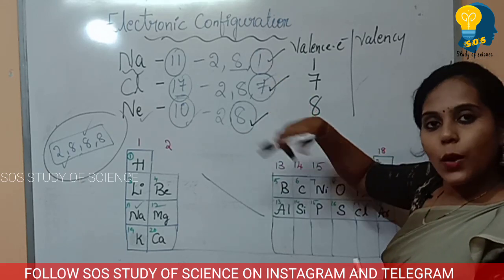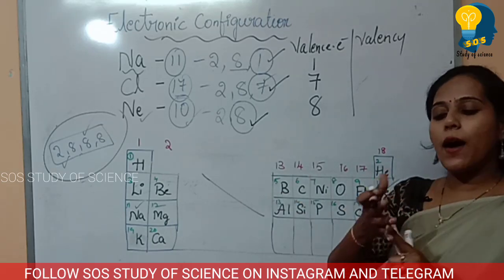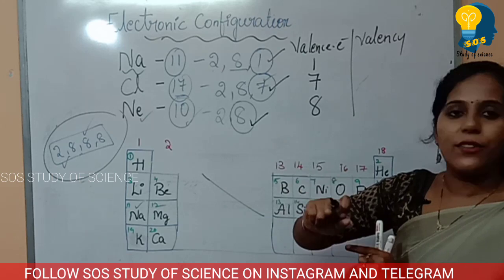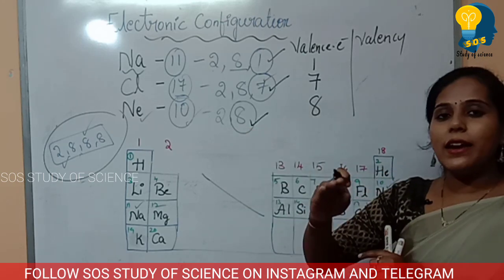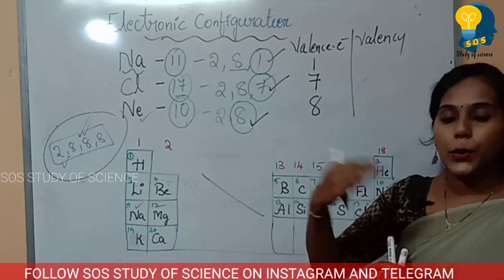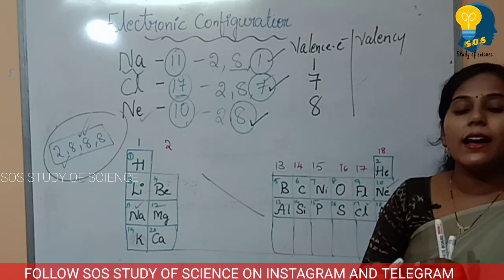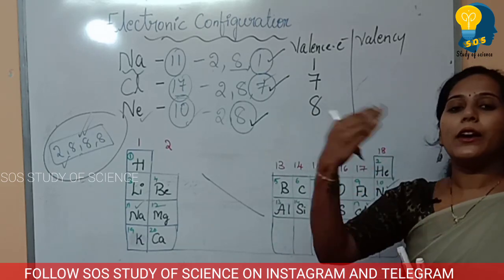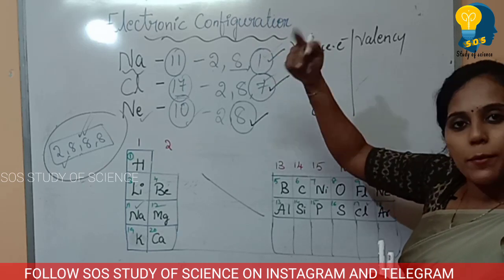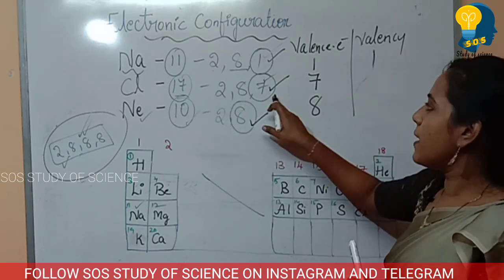Valency is different from valence electrons. Valency is the number of electrons donated or received. If 1, 2, or 3 electrons are in the outermost shell, they are easy to donate. If 5, 6, or 7 electrons are there, it is easy to receive electrons — up to the maximum of 8. So valency is the number of electrons an atom donates or receives.